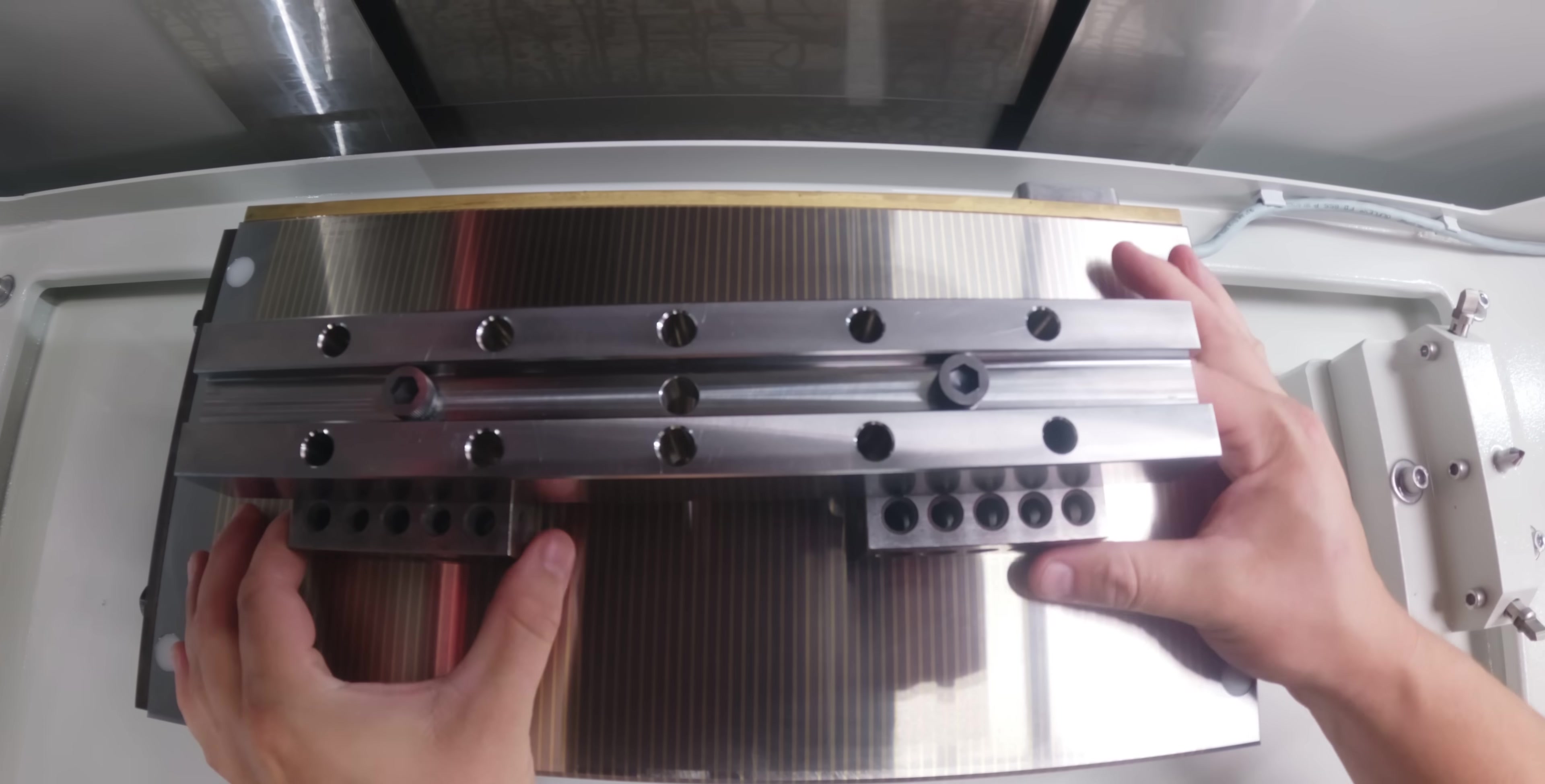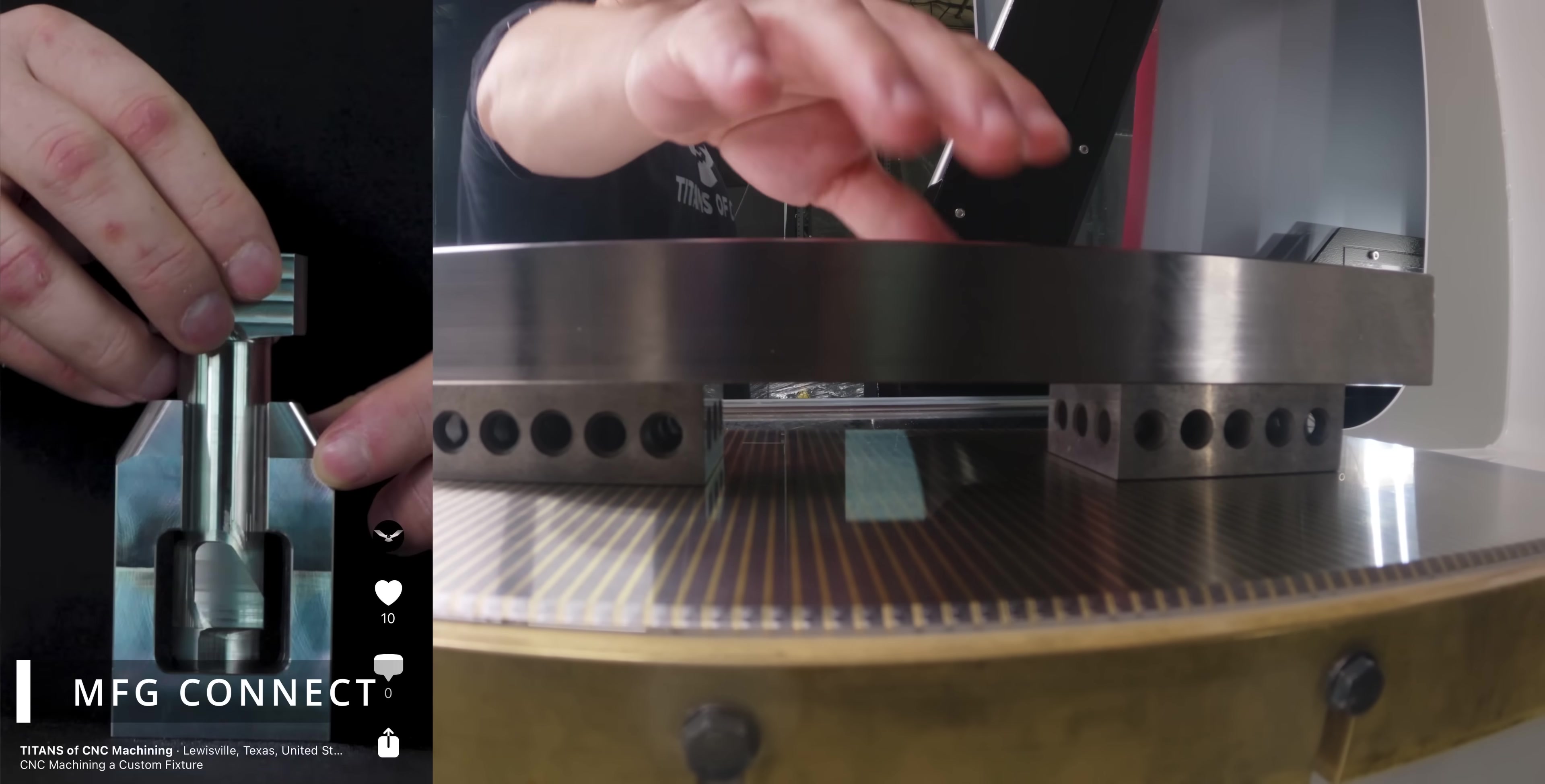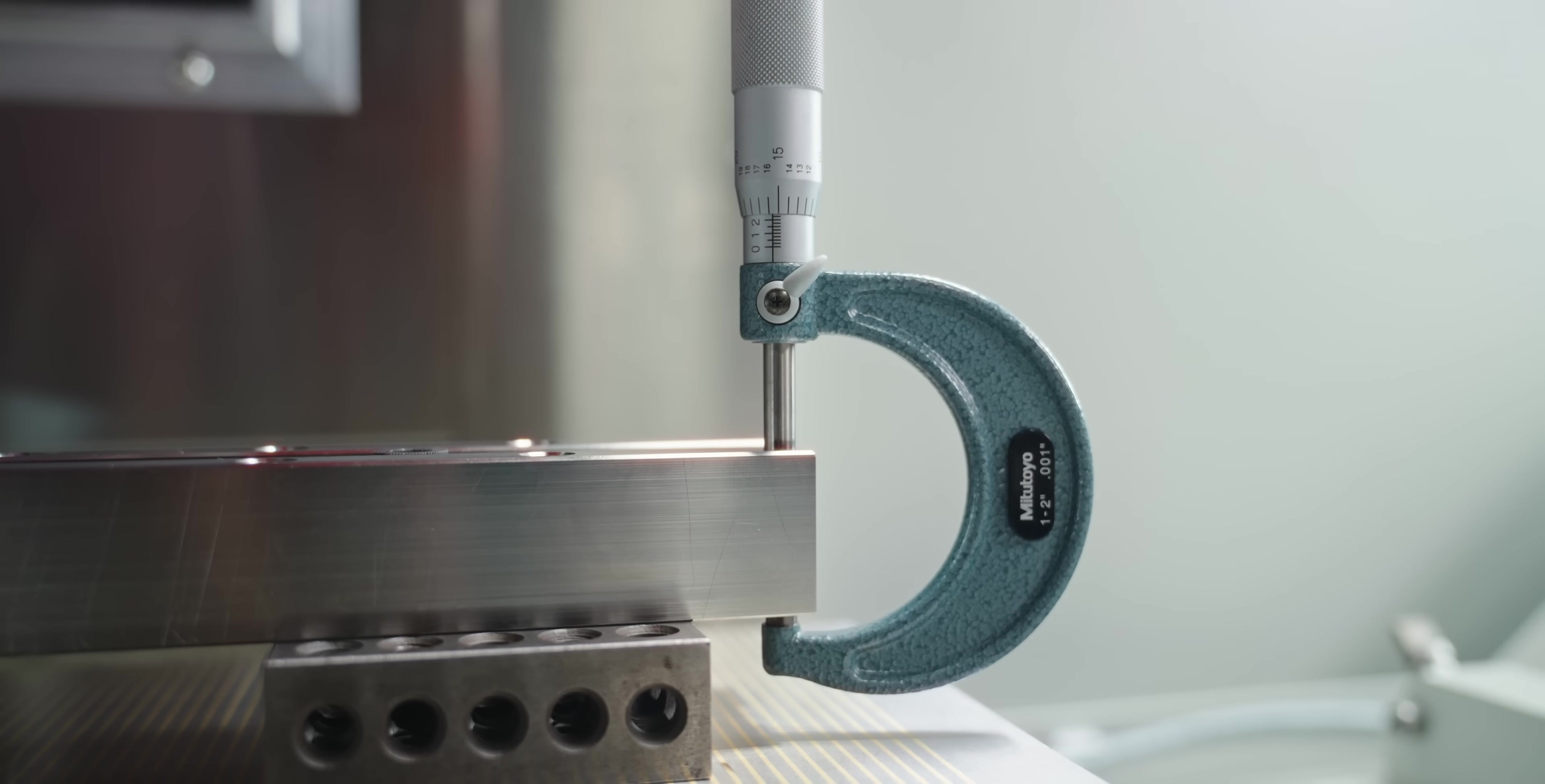Now I'm going to load up the first side with a part mounted to my one-two-three blocks. I ground these one-two-three blocks perfectly flat and perpendicular off camera. If you want to see how I did that, check out my posts on MFG Connect. I'm going to throw a mic on it to make sure I'm not going to take off too much material per side.